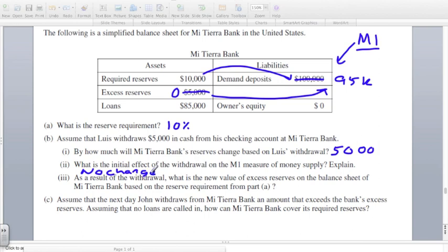So the answer is there'll be no change, no change on M1 money supply. Now notice here they ask you to explain. So you need to explain it. And the answer would be because the $5,000 is already a part of M1. So it's already a part of the existing M1 money supply. It has no effect on the M1 measure of money supply.